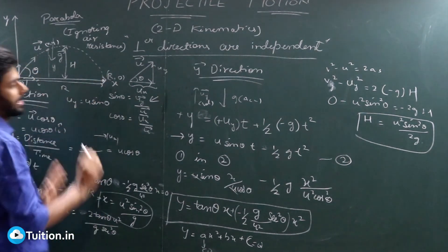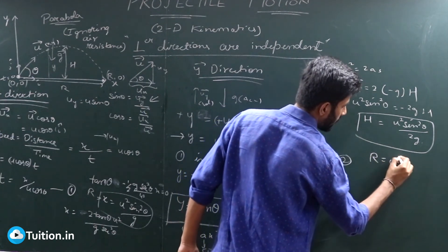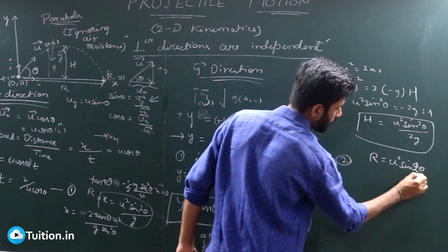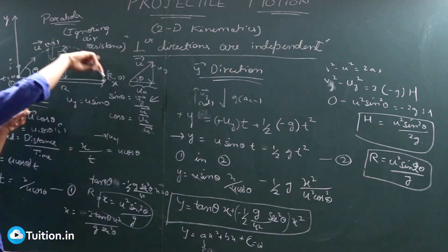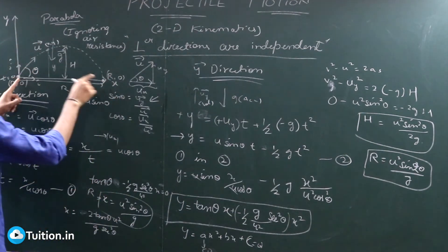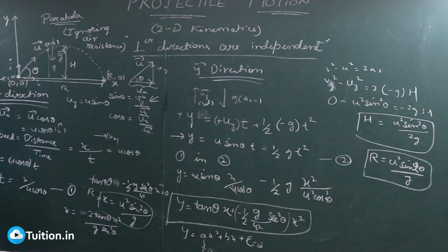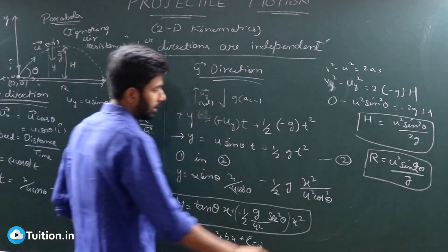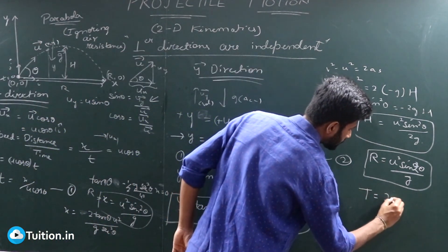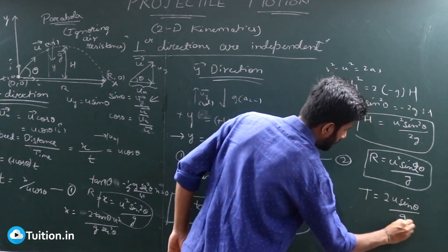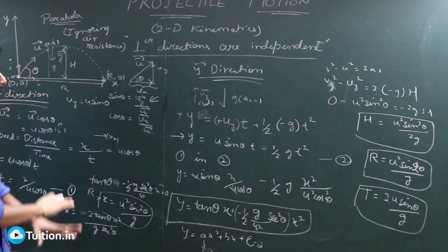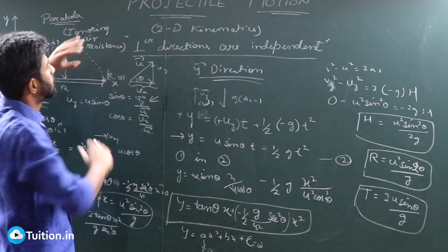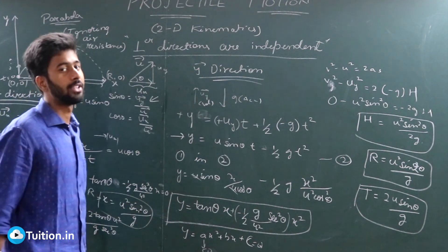So the range — the maximum horizontal displacement — is R = u²·sin2θ / g. Note it is sin2θ, not sin²θ. For the time of flight, which is the total time from launch to landing, you put x = R in the x-equation to get the maximum time. The formula for time of flight is T = 2u·sinθ / g. These are the three important formulas — maximum height, range, and time of flight — along with the core concept that perpendicular directions are independent. This completes our study of projectile motion. I hope you found this session informative. Thanks for watching.